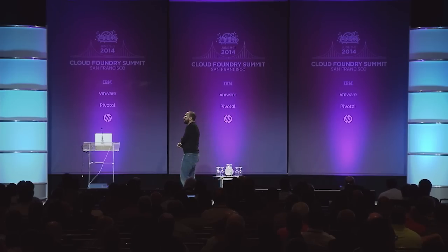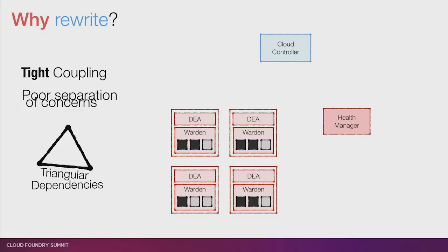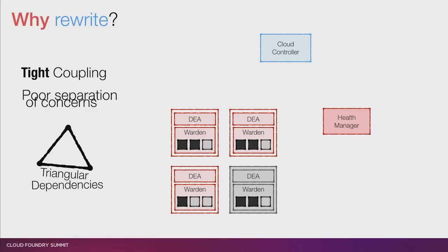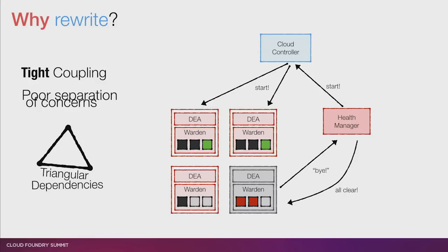That's the problem of orchestration. Now let's look at another problem: triangular dependencies. Let's bring the Health Manager into the picture. One thing we do is upgrade DEAs via a rolling deploy. We stop a DEA and move its apps around, and only once those apps have moved do we kill that DEA and bring up a new one. So the DEA tells the Health Manager it's going away. The Health Manager notices the apps need to move, tells Cloud Controller, which starts those apps. As soon as the Health Manager sees those apps are running, it sends an all-clear to the DEA, and the DEA goes away.